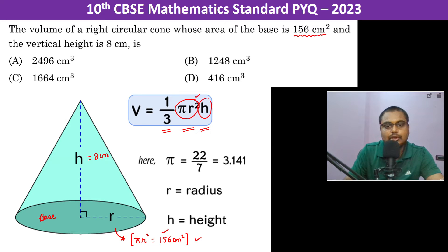So one by three into 156 centimeters square into 8 centimeter. Three goes into fifty-two, that's sixteen, and four. So it's four hundred and sixteen centimeter cube. That is the answer.